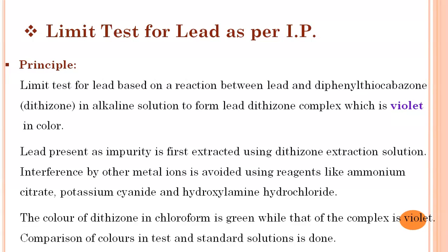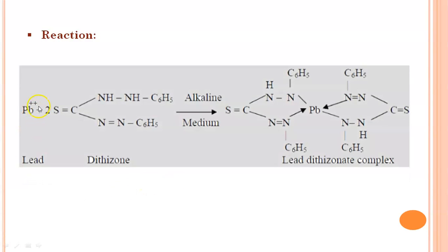The color of dithizone in chloroform is green, while that of the complex is violet. A comparison of color in the test and standard solution is done — if the test solution has a color intensity less than that of the standard, it complies with the limit test for lead as per IP. In summary, lead present in substance reacts with dithizone in alkaline medium to form the lead dithizone complex, which is violet in color.